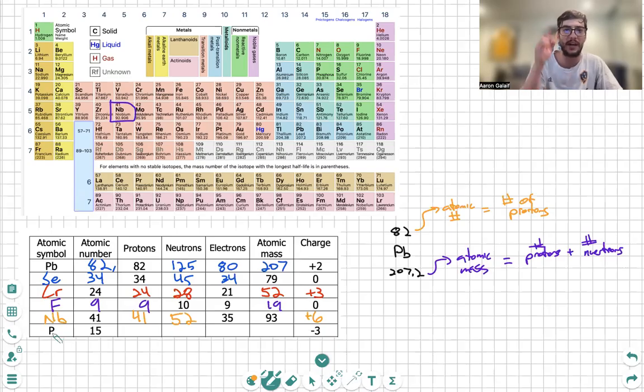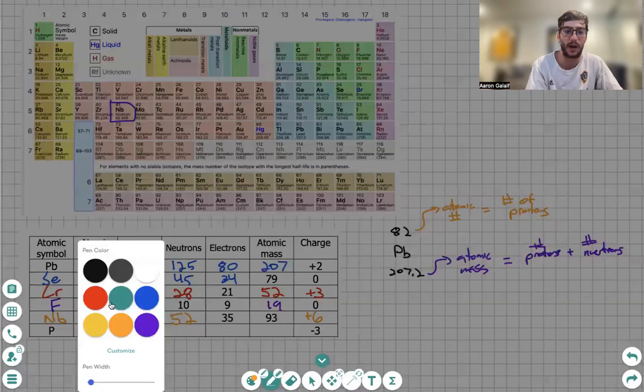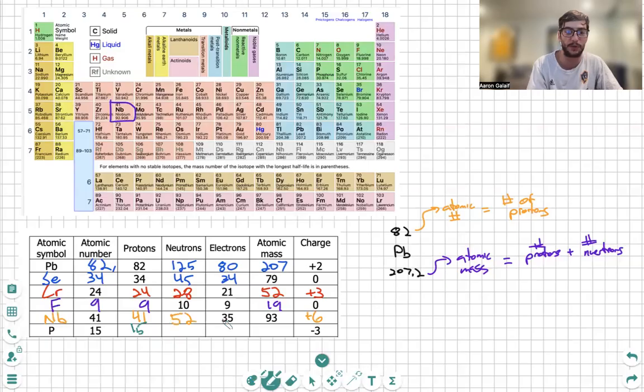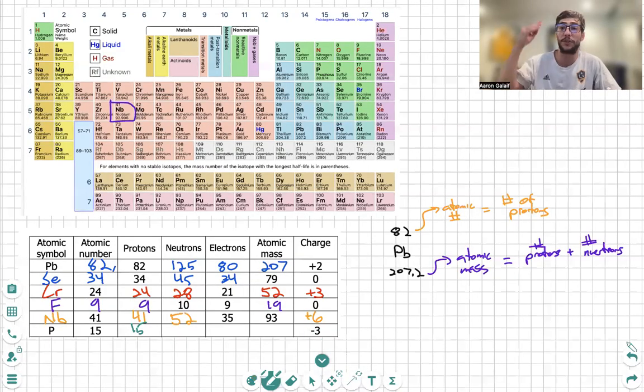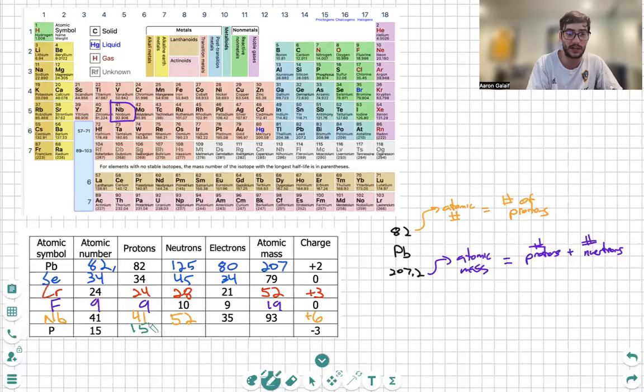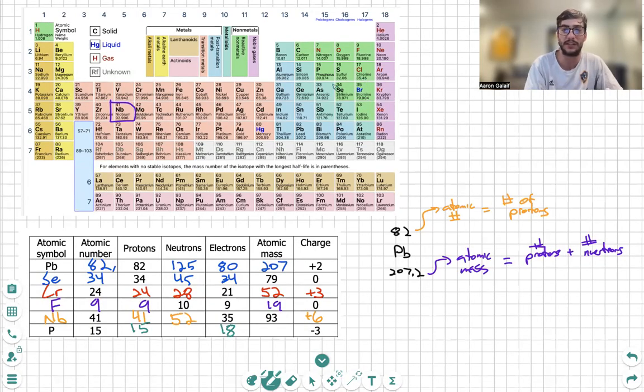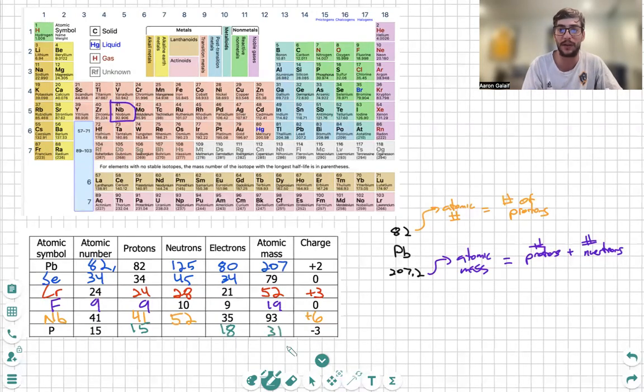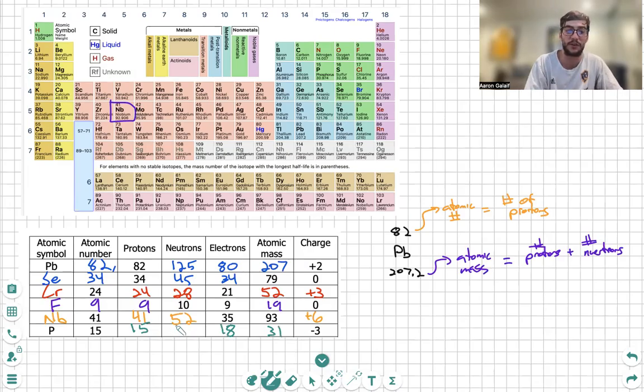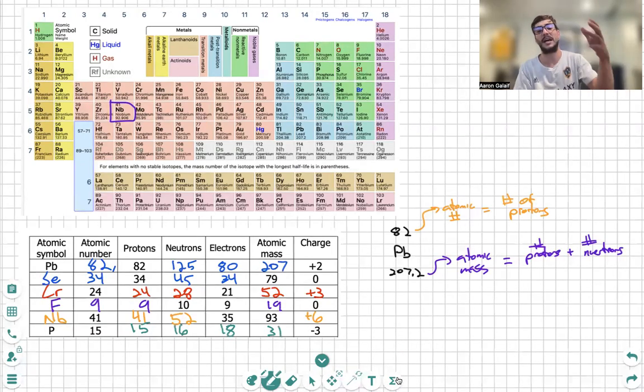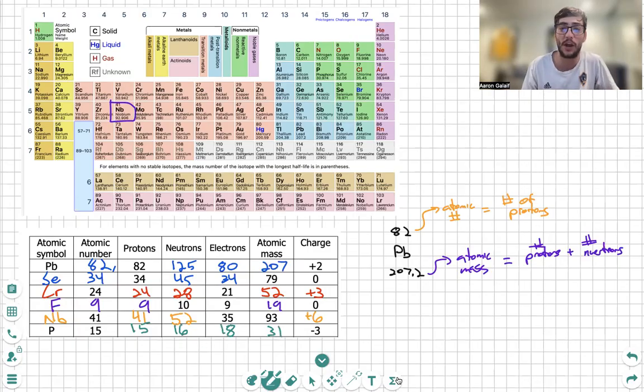Last one. We are given the element this time, which is phosphorus. We have an atomic number of 15, so we also know that we have 15 protons. This time we have a negative three charge, therefore there must be three more electrons than protons. Thus, if I had 15 protons I need three more electrons, so 18. We also look at the periodic table to determine that the atomic mass is 31 after rounding, and we can see that 31 minus 15 is 16 for our neutrons.